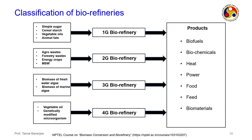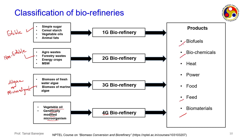Now there is also a 4G biorefinery — the 1G, 2G, and 3G have already been discussed. Vegetable oil byproduct and genetically modified microorganisms together can be a source of 4G bio-refinery. The 3G is mainly microalgae such as phytoplankton. If I want to recollect: 2G is the non-edible source (agro-waste) while 1G is the edible source. All of these again give the same outputs: biomaterials, feed, biochemicals, biofuels, and power.